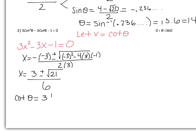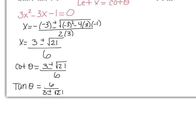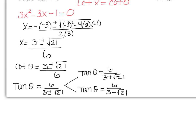In the calculator: parenthesis negative 3 squared, minus 4, open parenthesis 3, close, open parenthesis negative 1, close. You should get about 21. So cotangent of theta equals 3 plus or minus radical 21, over 6. What would tangent be? Tangent of theta would be 6 over 3 plus or minus radical 21. In the calculator, we're going to branch this into two possibilities for tangent of theta. Tangent of theta is either 6 over 3 plus radical 21, or 6 over 3 minus radical 21.